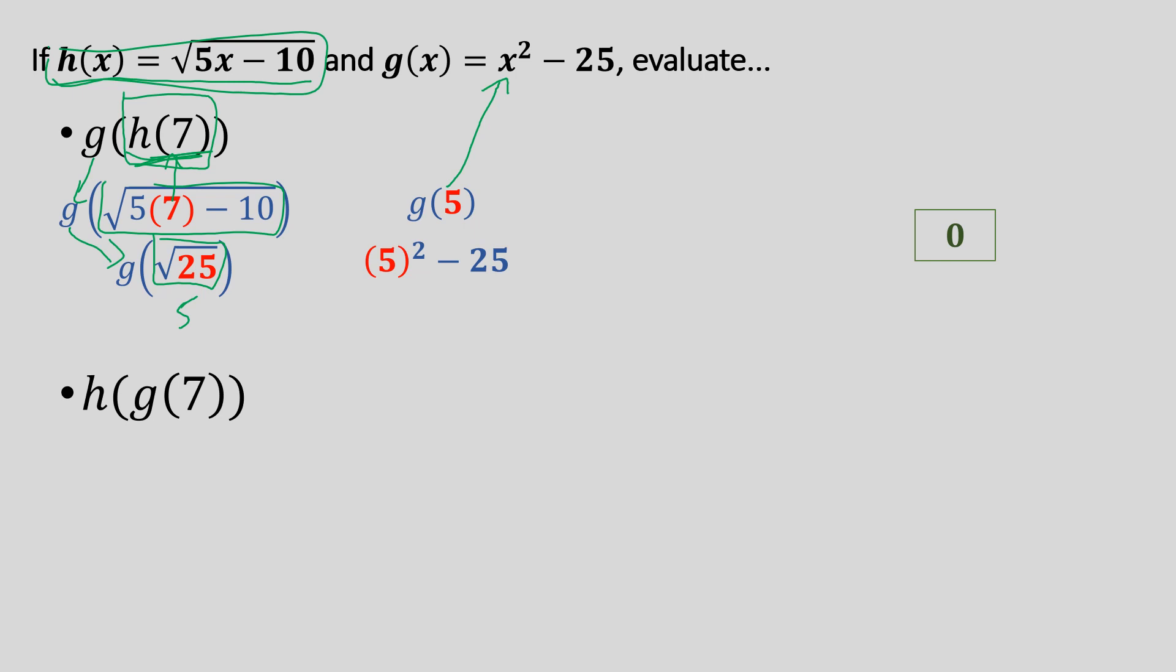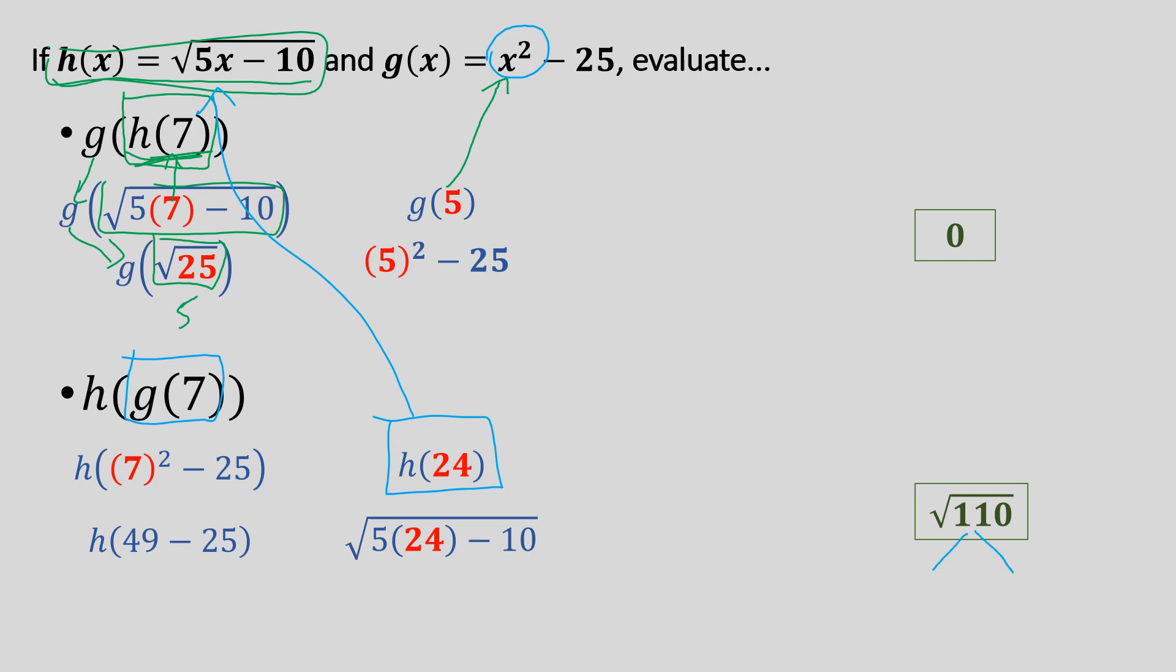On the bottom one, we're just gonna flip the two function orders. So we're gonna start on the inside, and we're gonna do g of seven first. So we start off by plugging seven into that g function. Seven squared minus 25, we get 24. Now that's gonna get plugged into the h function. So that's going up here, getting plugged into that x. Five times 24 minus 10 gives us radical 110. We would try to do a factor tree on this. We would be unsuccessful. We can't break that down any more than it already is.